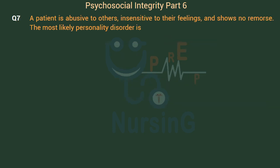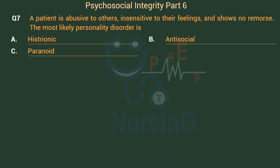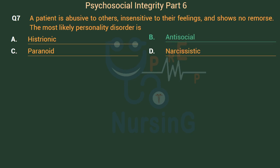A patient is abusive to others, insensitive to their feelings, and shows no remorse. The most likely personality disorder is: Option A: Histrionic. Option B: Antisocial. Option C: Paranoid. Option D: Narcissistic. The right answer is Option B — Antisocial.